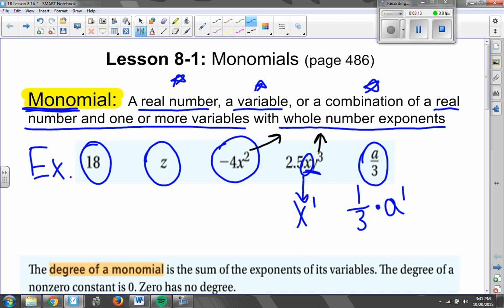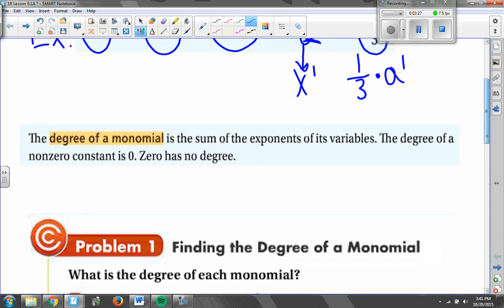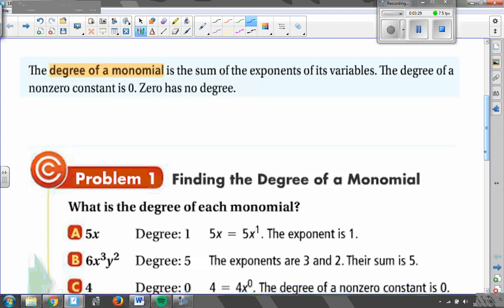So part of your homework is going to be to decide, is that a monomial or is it not a monomial? The other part of our lesson today deals with what is called the degree of a monomial. The degree of a monomial is the sum of the exponents of its variables.